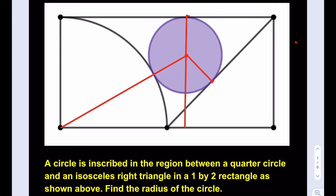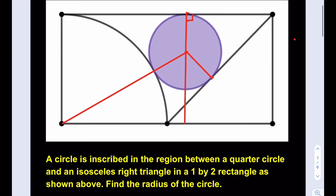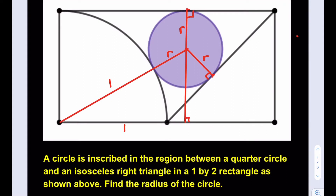Let's call the radius r everywhere. We have a 1 by 2 rectangle, meaning that this side is going to be 1, this side is going to be 1, and this is going to be 1. I need to use some variables here. This angle is 90 degrees, this is also 90 degrees, and let's call this length x.